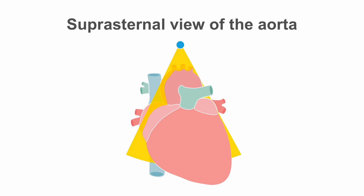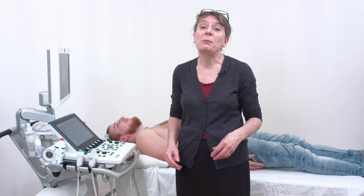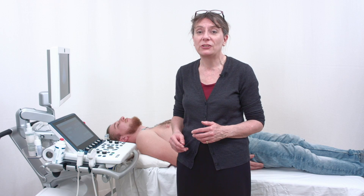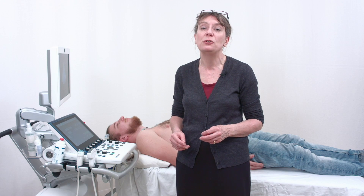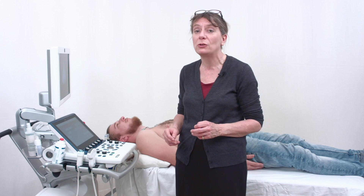This shows where the suprasternal view of the aorta is taken. The probe is up here, scanning through the aortic arch, the vessels, and then on to the heart beneath. This is another view where we need to alter the position of our patient slightly, because we're going to scan suprasternally from the suprasternal notch.